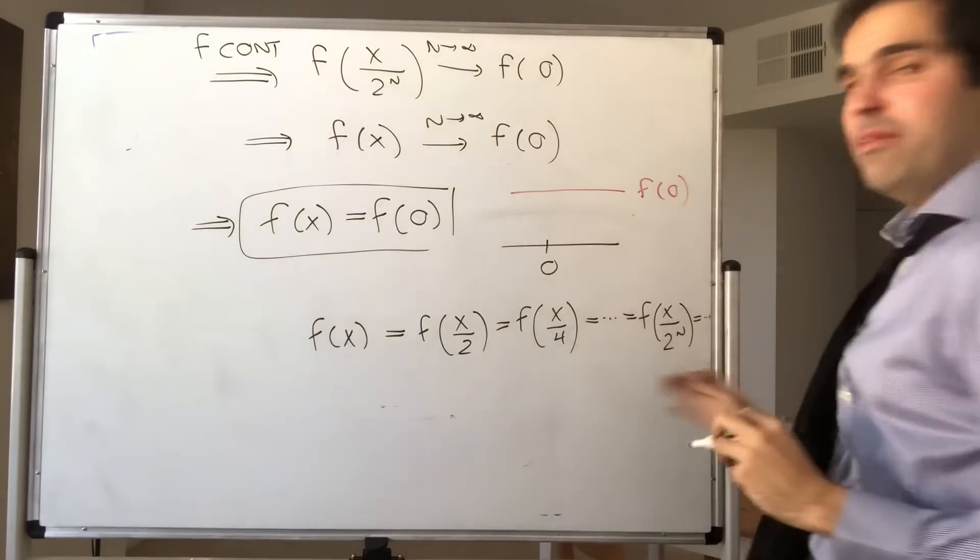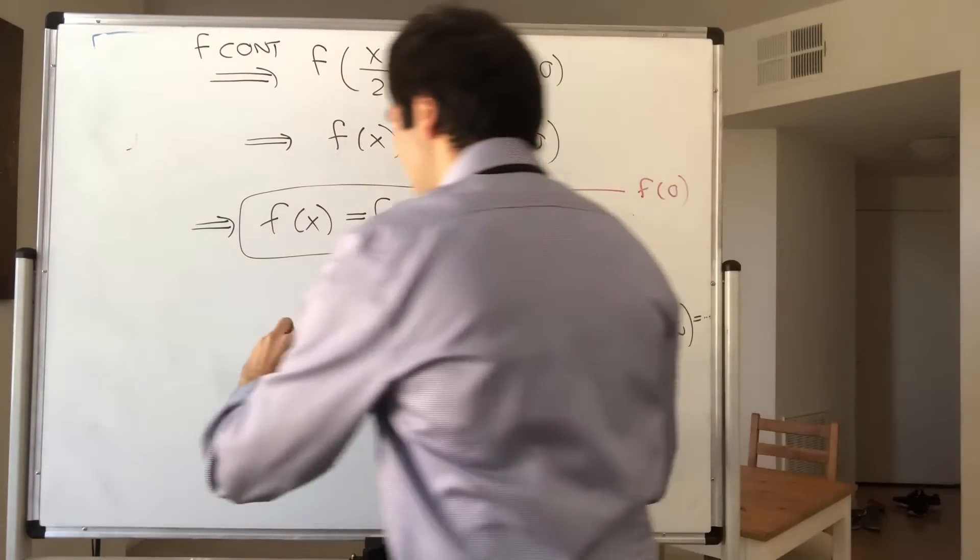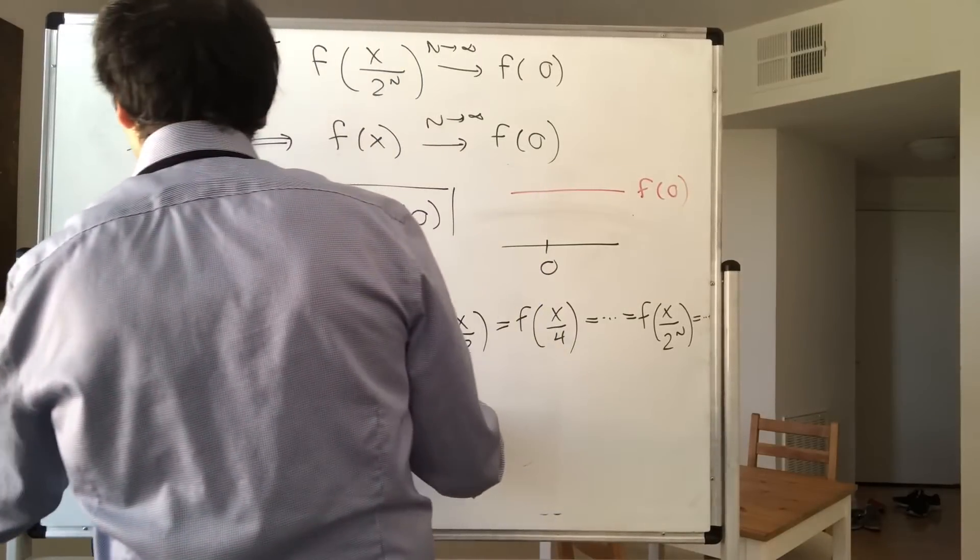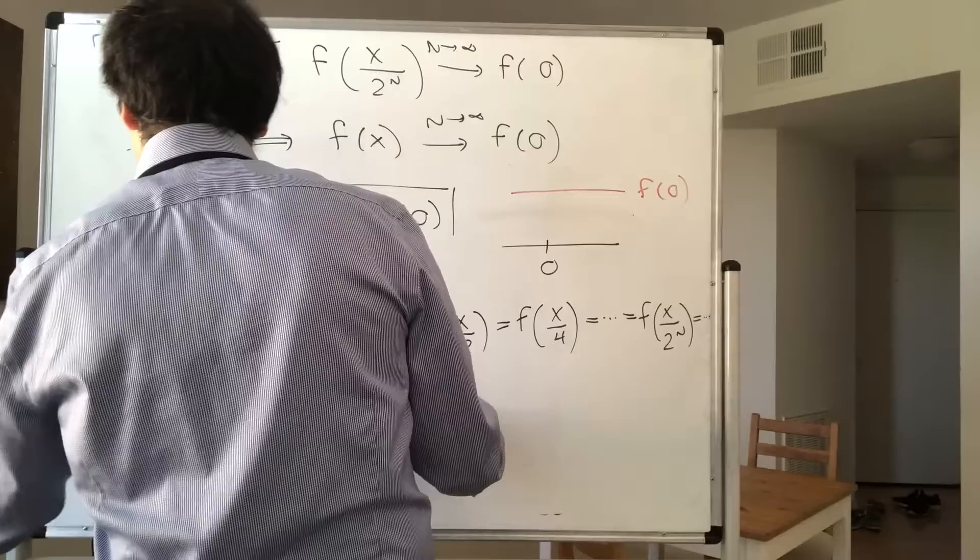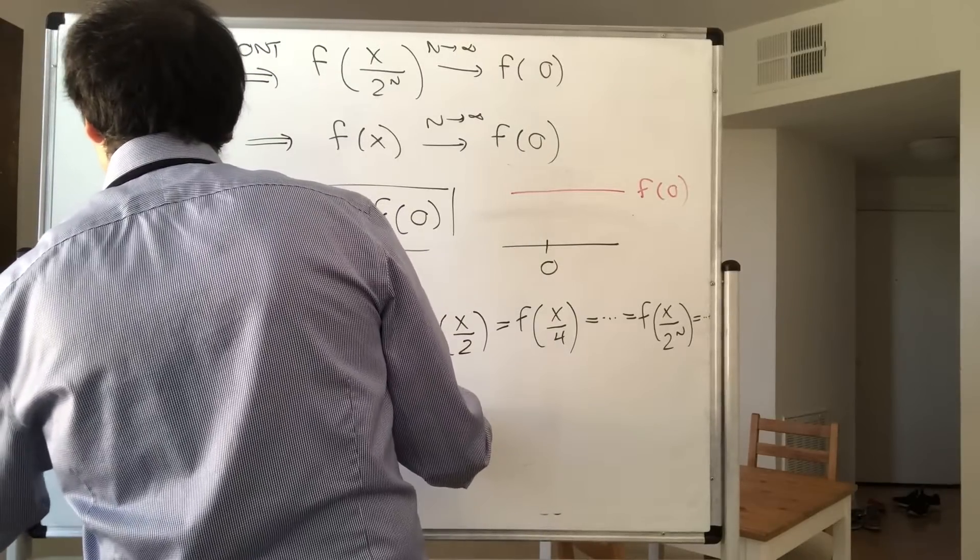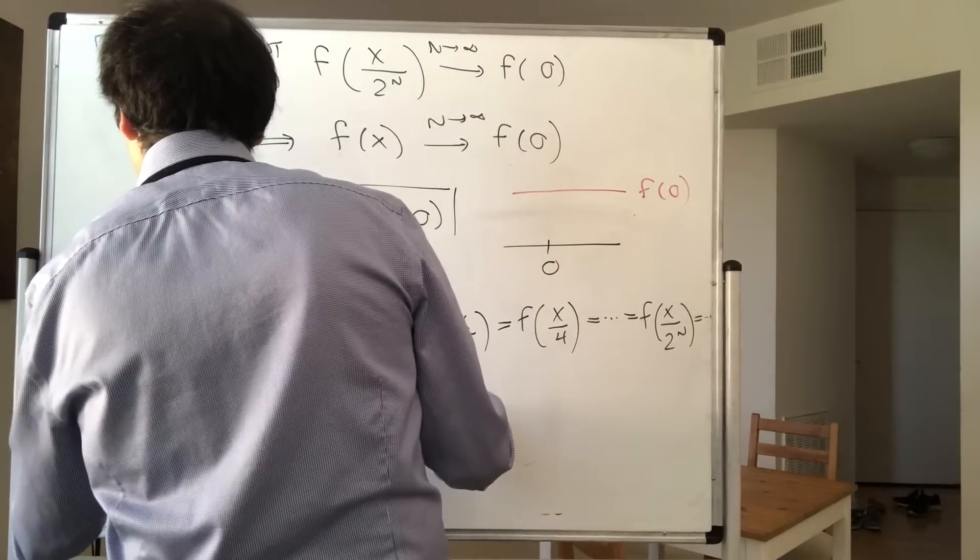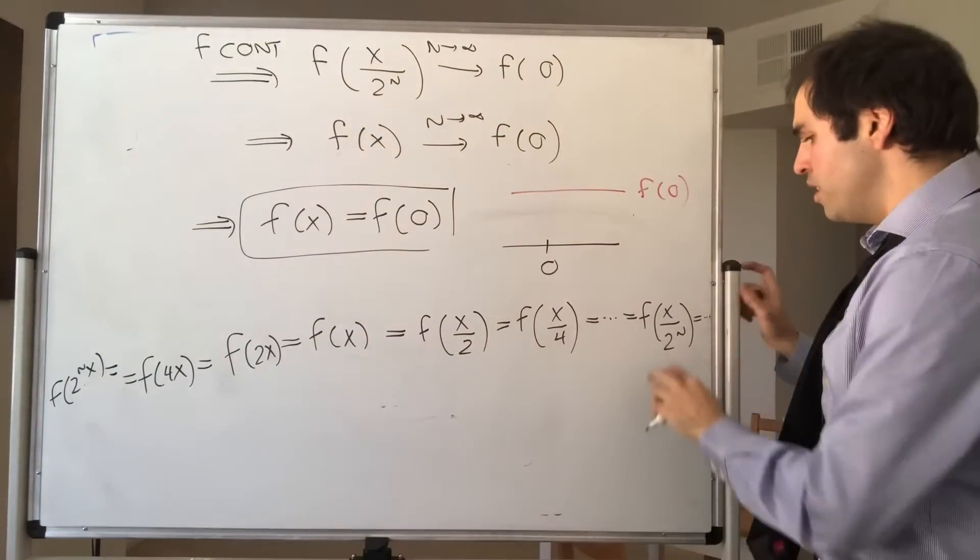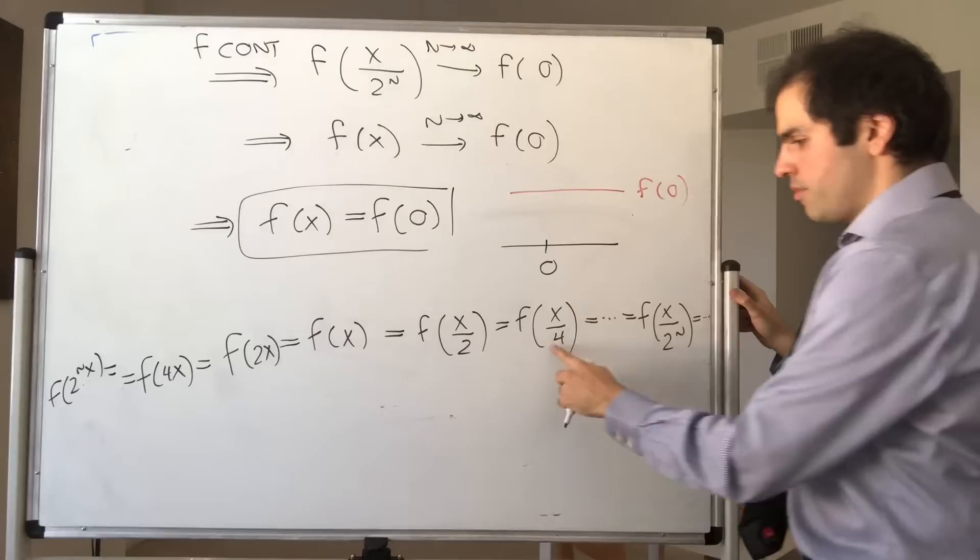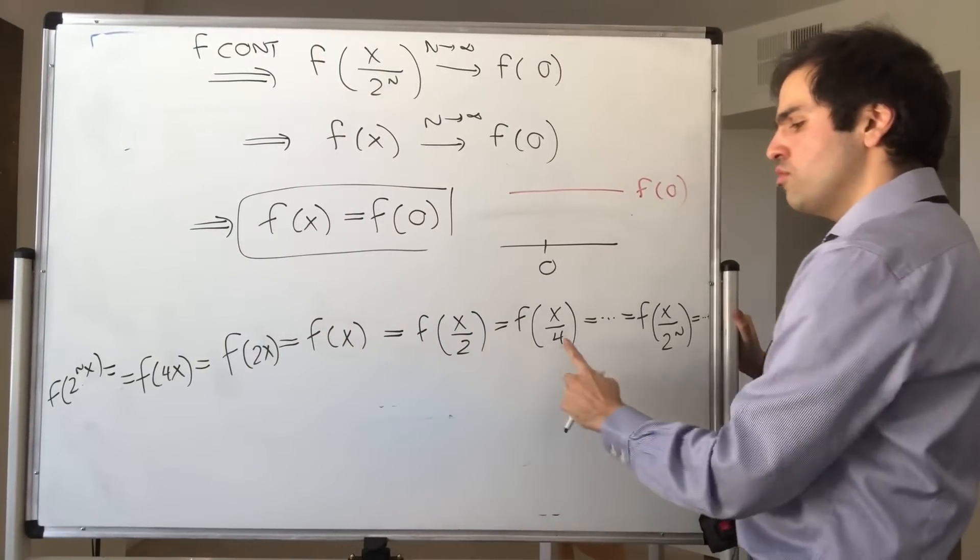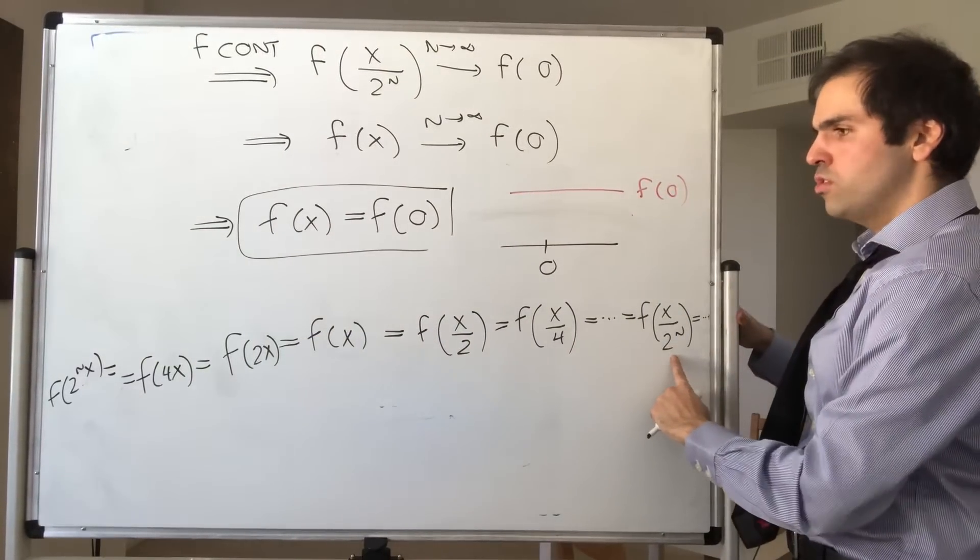But remember, first identity, f of x is actually f of 2x. But then that's also f of 4x, and also f of 2 to the nx. And in particular, notice that f has a constant value whenever you have x over 2, x over 4, x over 2 to the n, and multiplications by powers of 2 to the n.